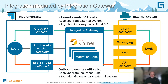Or maybe I have an external system that needs to listen for changes to a claim. With app events, I can publish those changes as they occur. Integration Gateway can pick them up, maybe format them to a new data format, and send them to the external system.